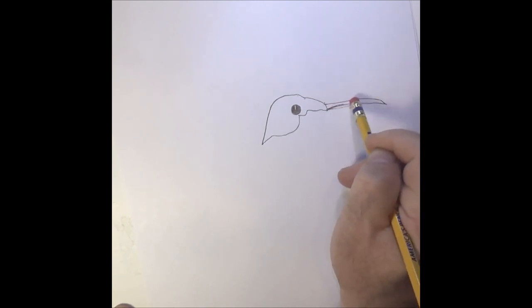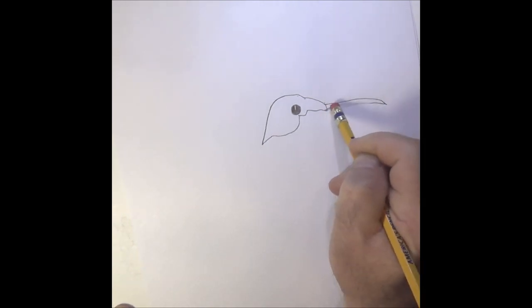Let me erase that. Kind of hard to draw a hummingbird beak. From there you come from underneath that beak just a little bit and you draw a line angled down. Now we have the shape of our bird's head and chest.